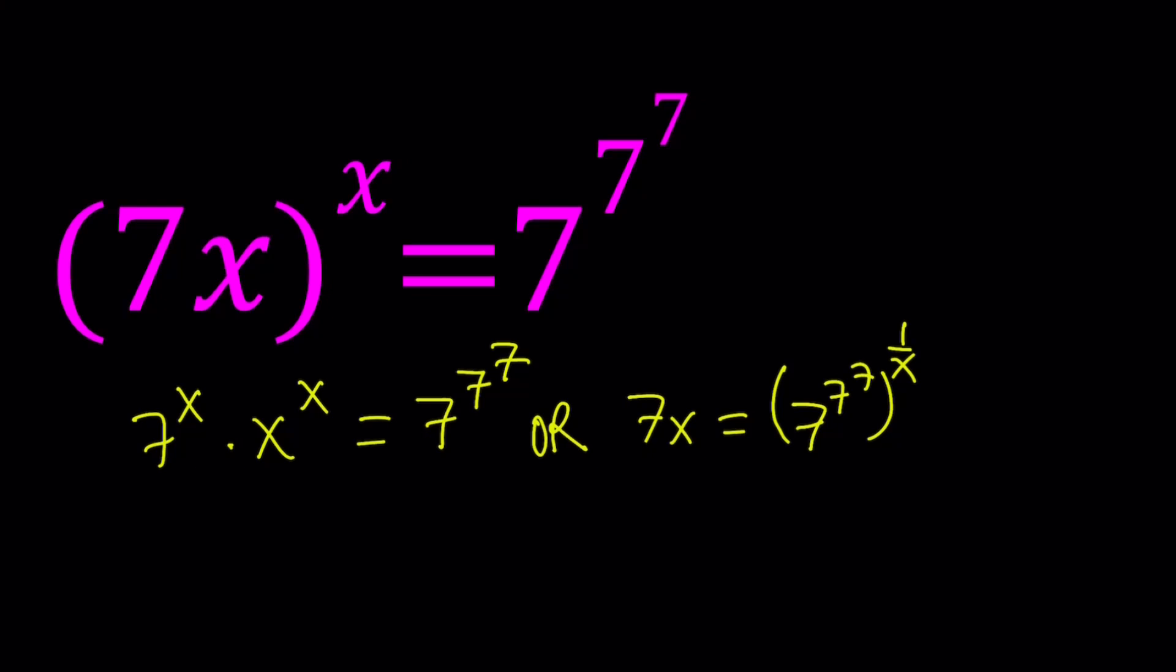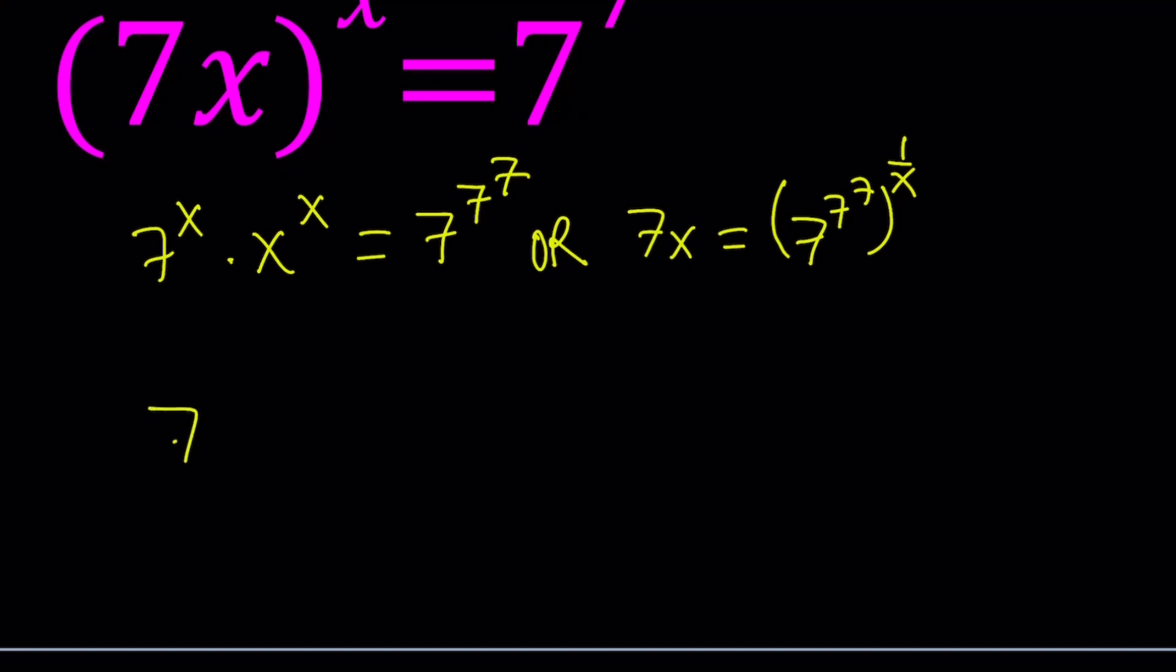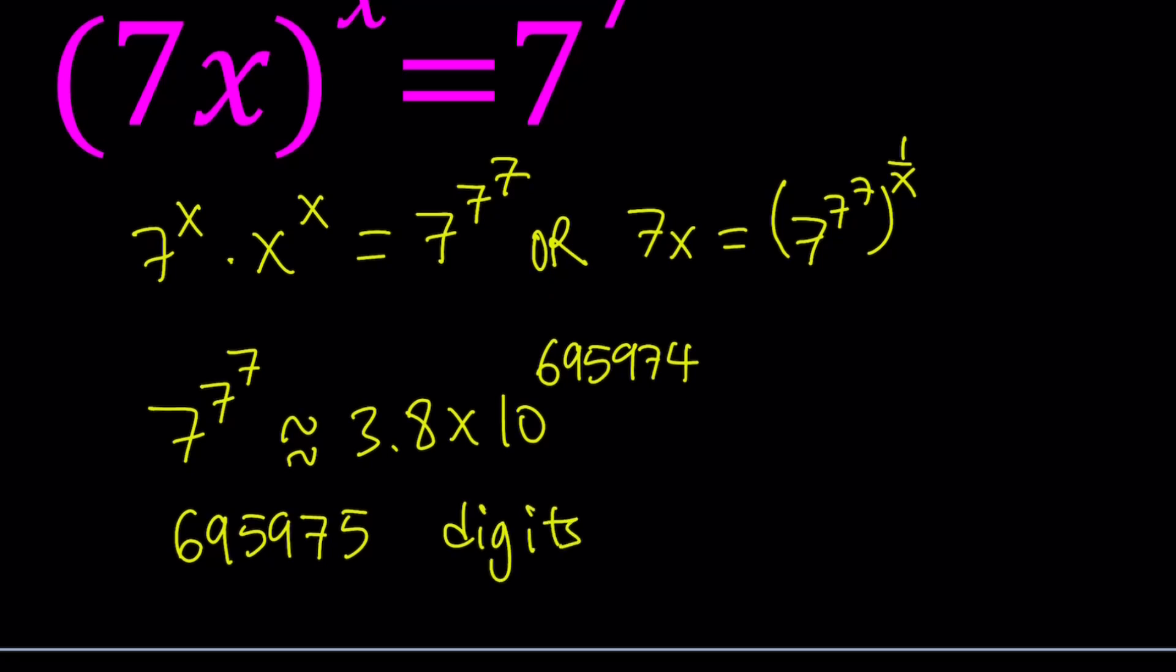Alright, great. So 7 to the power 7 to the power 7 is actually a very, very large number. It's about 3.8 times 10 to the power 695,974. Wow, that's a crazy number. Can you imagine this number has 695,975 digits? Think about it. That is just the number of digits that this number has. So it's a gigantic number.